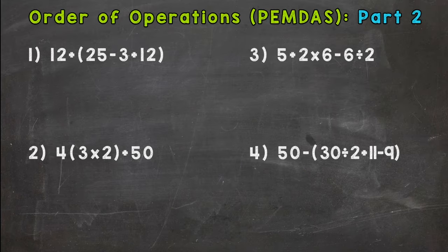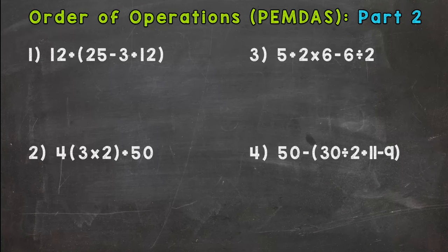Here we have Order of Operations Part 2, where we are going to do four problems that build upon the problems we did in Part 1. These are a little bit harder and more complex, a little bit longer with more steps to solve. If you're looking for Part 1 and you missed it, I dropped the link in the description — I highly suggest you check that out before Part 2 because Part 1 has more of an introduction about the steps we use to solve these problems.